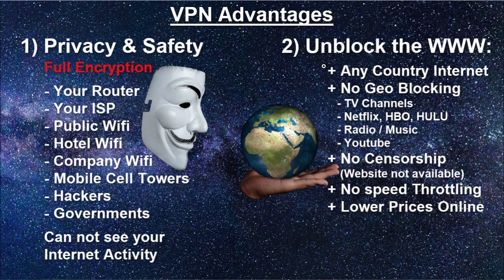Most people of course use it to access any country and to circumvent geo-blocking on Netflix. For example, also TV channels — most TV channels block people from other countries. So you can use it for TV channels, Netflix, HBO, Hulu, Pandora Radio. And YouTube is also different from country to country. And of course, to circumvent censorship. There are some cases where internet service providers throttle your speed depending on what you're doing, but if you encrypt everything they cannot see what you're doing, so they will not throttle your internet — and you might even get lower prices.